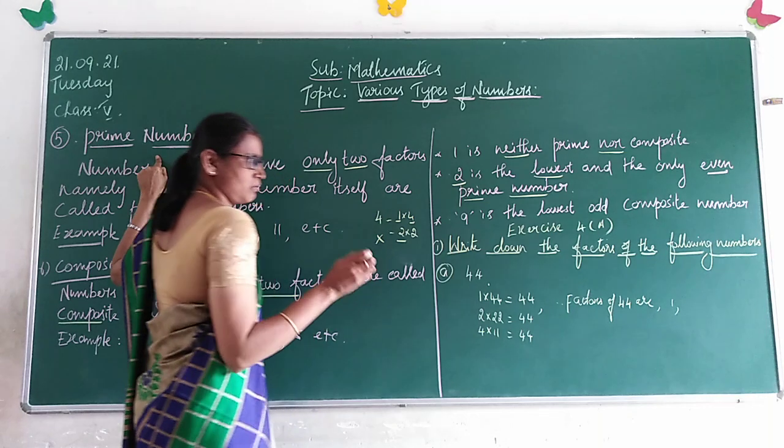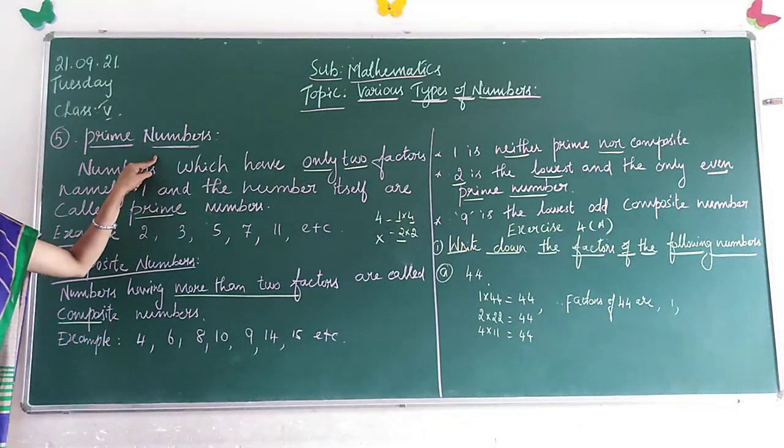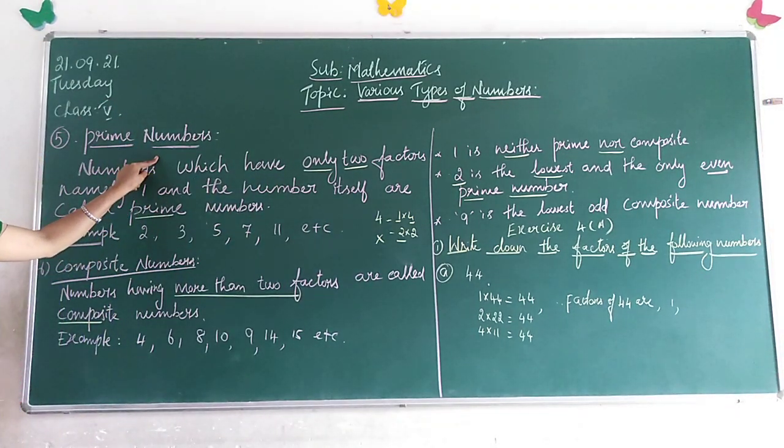Prime numbers have only two factors: 1 and itself.